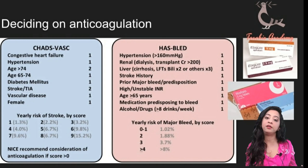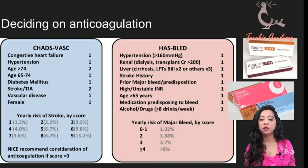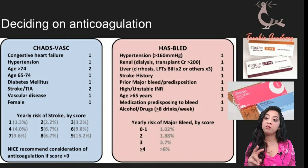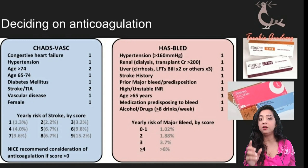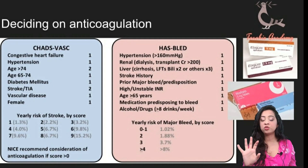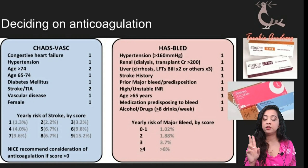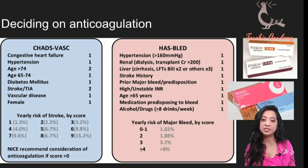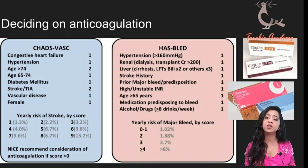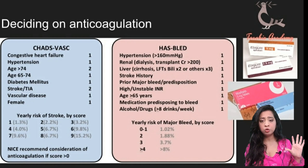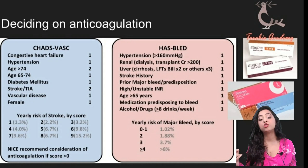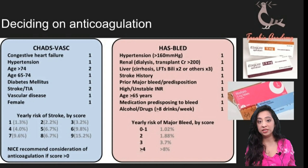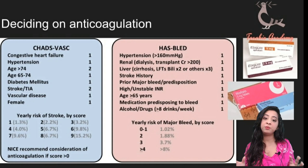Earlier, the guidelines stated that if a patient scores 1 and is male, or a female scores 2, you give aspirin, and if they score more than 2 you give warfarin or apixaban. Remember the female sex already costs 1 point. The guidelines have actually changed, and the NICE guidelines now recommend that anyone with AF scoring greater than 0 should be offered anticoagulation, and the shift has been away from warfarin.